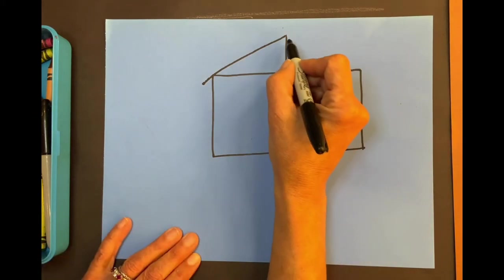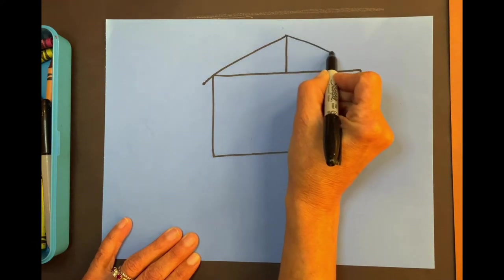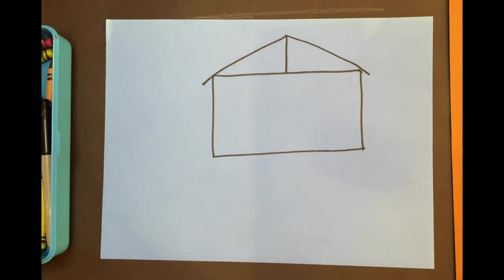Great. Now here's the other side of the roof. Same thing. Start at the very top and then you're going to go to the corner and a little bit past it. Now we can see where the log cabin is, right?